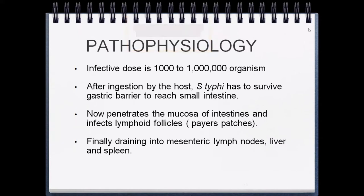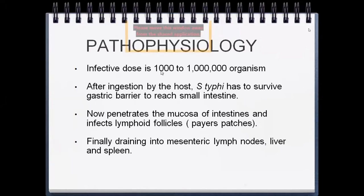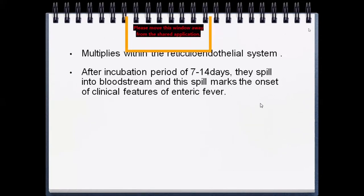The infective dose is one thousand to one million organisms. After ingestion, Salmonella Typhi must survive the gastric barrier to reach the small intestine. It penetrates the intestinal mucosa, infects lymphoid follicles known as Peyer's patches at the ileocecal junction, and drains into mesenteric lymph nodes, liver, and spleen. It multiplies within the reticuloendothelial system for 7 to 14 days, then spills into the bloodstream, marking the onset of clinical features.